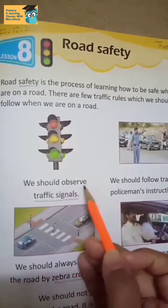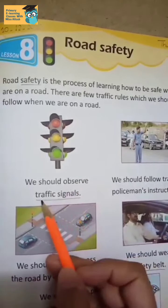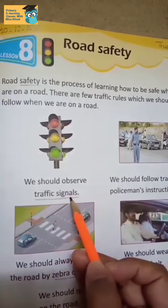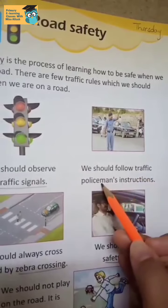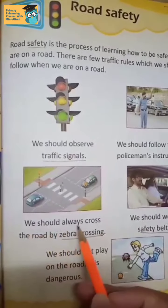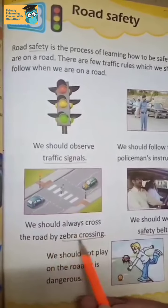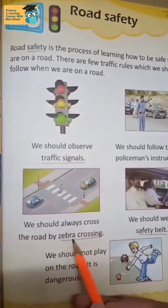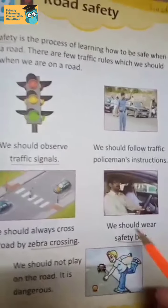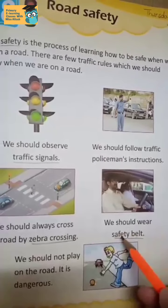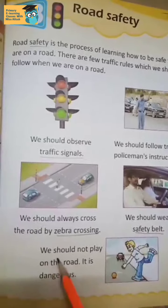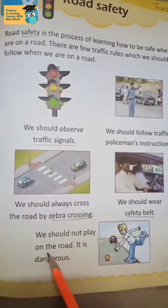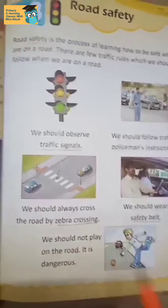We should observe traffic signals — underline this difficult word, traffic signals. We should follow the traffic policeman's instructions. We should always cross the road by zebra crossing — underline zebra crossing. We should wear a safety belt — underline this word, safety belt. We should not play on the road; it is dangerous.